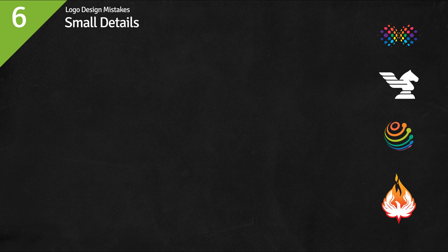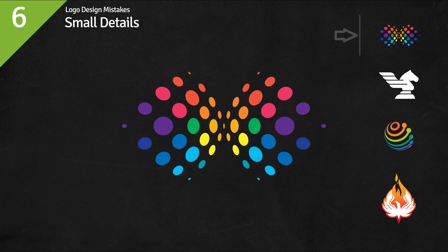Mistake number six: small details. You can have small details in a logo, and most of the time that's fine. When it is not okay is when the logo cannot function without those small details, or when the small details become a mess when the logo is scaled down. In this first example we have a dual globe logo — interesting with cool colors. There are some very small dots along the edges. This is not a serious problem; if those dots are lost at smaller scale, the logo will still work. But it could have been better if those dots were slightly bigger.